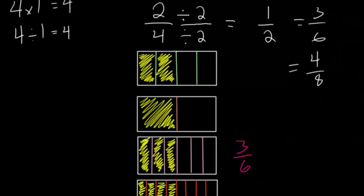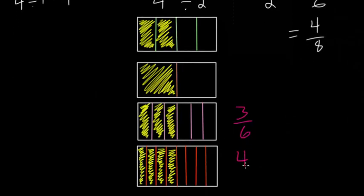Below that, you can see the fraction 4 divided by 8. Because the denominator is 8, we cut it into 8 equal pieces. And since the numerator is 4, we would shade in 4 of these as yellow.